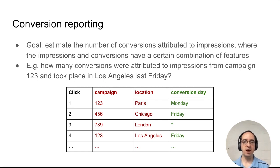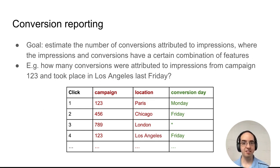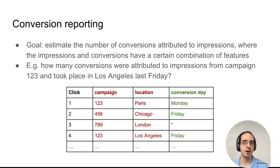We want to estimate the number of conversions attributed to impressions with a certain combination of features. For example, given this dataset of clicks that occurred in different ad campaigns at different locations and days, we can ask how many conversions were attributed to impressions from Campaign 123 and took place in Los Angeles last Friday.